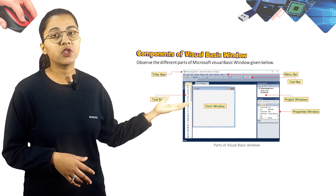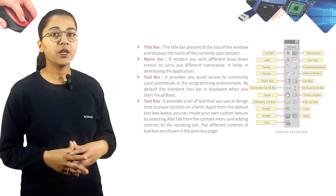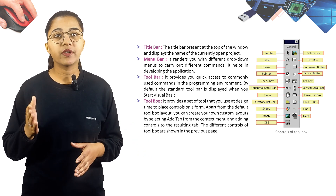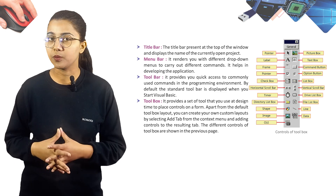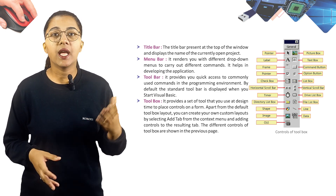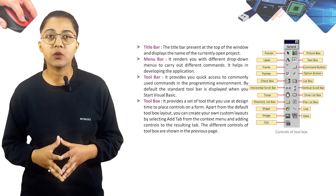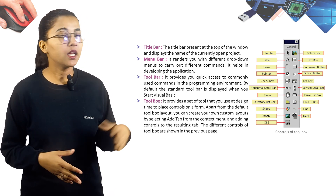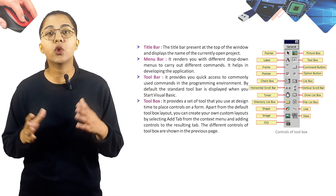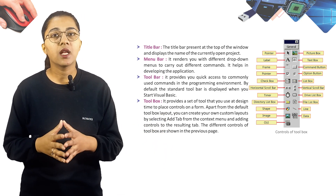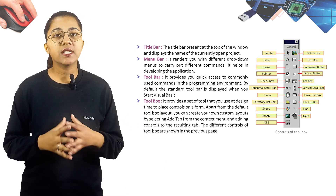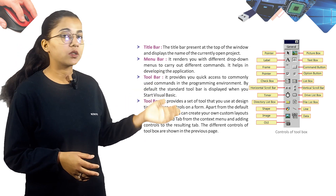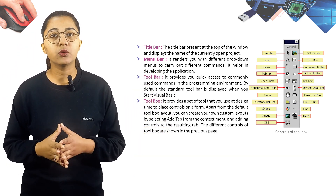The Title Bar is present at the top of the window and displays the name of the currently open object. The Menu Bar provides different drop-down menus to carry out different commands, helping in developing the application. The Toolbar provides quick access to commonly used commands in the programming environment; by default, the standard toolbar is displayed when you start Visual Basic.